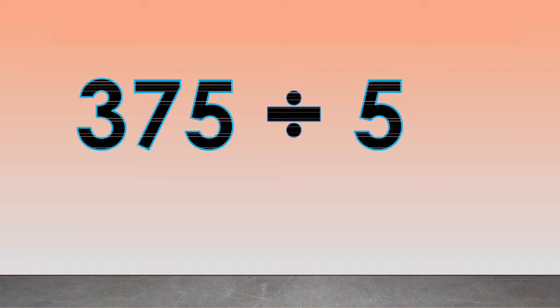Another example: 375 divided by 5. First, write the problem using a long division symbol. Next, take the first digit of the dividend, which is 3. Since 3 is smaller than the divisor 5, we cannot divide it. Therefore, we have to take the following digit of the dividend, which is 7, so it becomes 37.